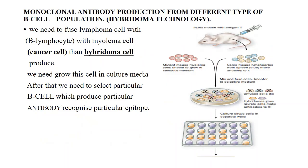Let's look at how monoclonal antibodies are produced. They are produced through hybridoma technology. If we inject some antigen inside a mouse body, the mouse body synthesizes antibodies against it through lymphocytes. We then need to fuse this mouse lymphocyte with a myeloma cell, or cancer cell. We fuse the lymphocyte with the myeloma cell because cancer cells grow very fast and divide rapidly. Fusing the lymphocyte cell with the myeloma cell produces a hybridoma cell, and this hybridoma cell can differentiate very easily and quickly.